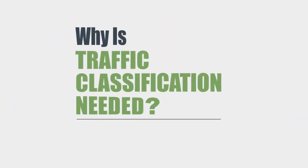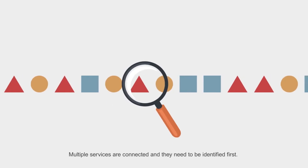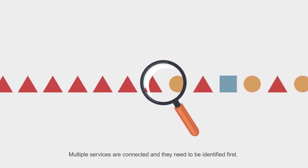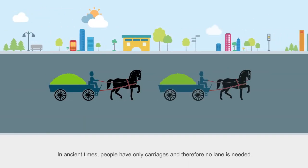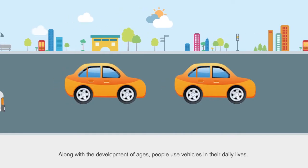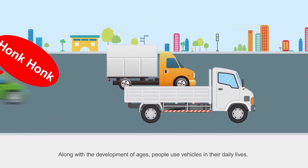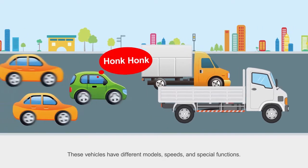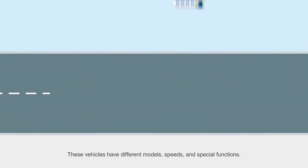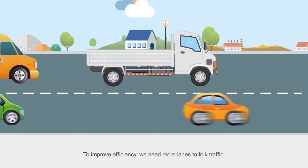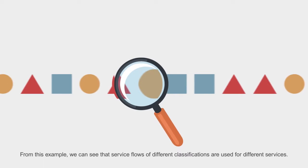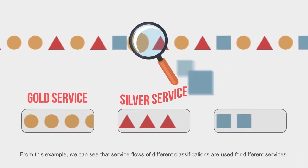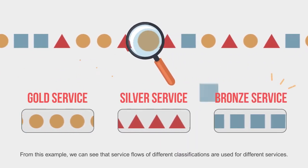Why is Traffic Classification needed? Multiple services are connected and they need to be identified first. In ancient times, people had only carriages and therefore no lane was needed. Along with the development of ages, people use vehicles in their daily lives. These vehicles have different models, speeds and special functions. To improve efficiency, we need more lanes to fork traffic. From this example, we can see that service flows of different classifications are used for different services.